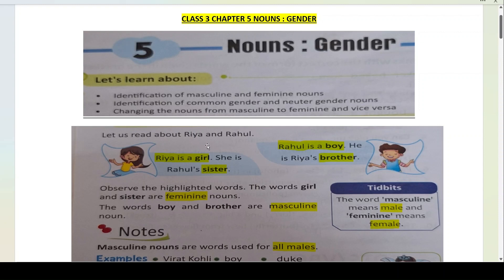Let us read about Riya and Rahul. Here we have two children — one is Riya and one is Rahul. Riya is a girl. She is Rahul's sister. Rahul is a boy. He is Riya's brother. Now we will observe these highlighted words. The words 'girl' and 'sister' are feminine nouns.